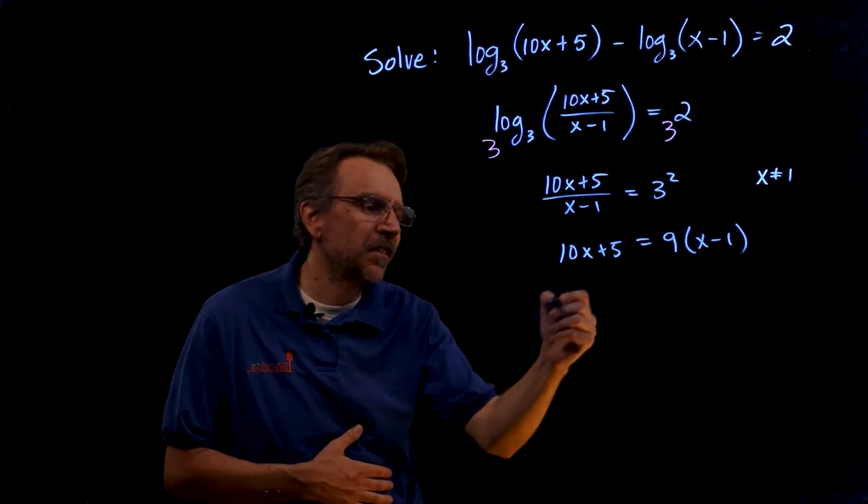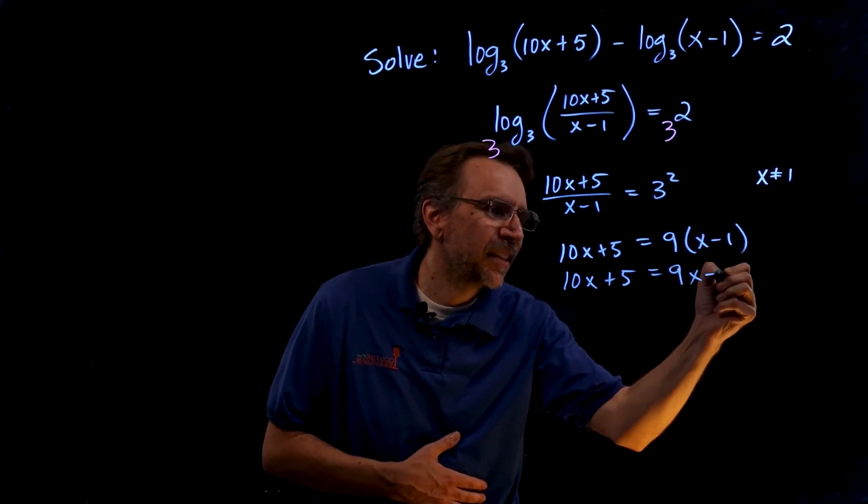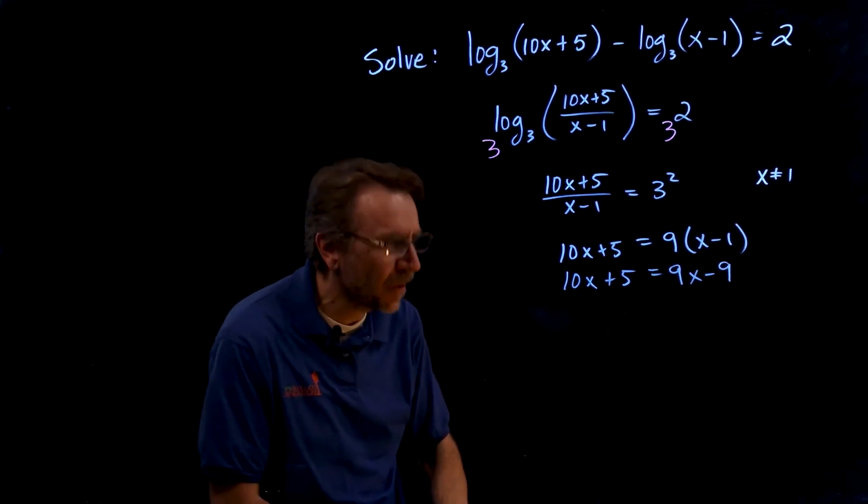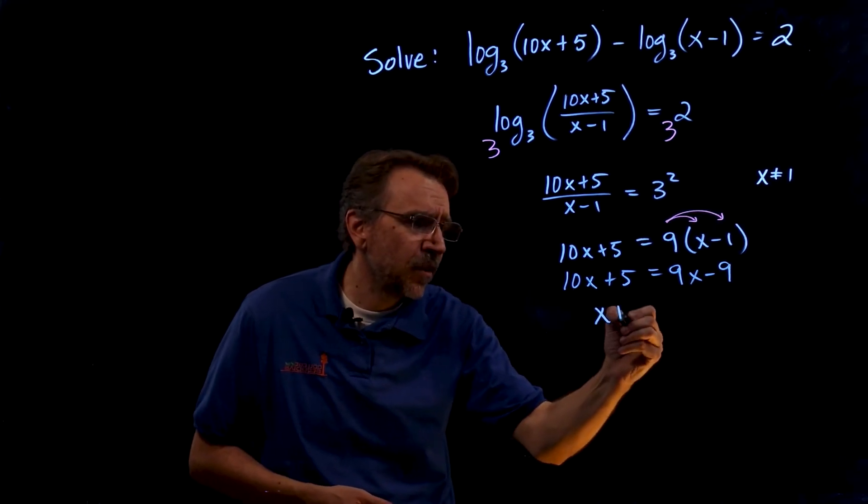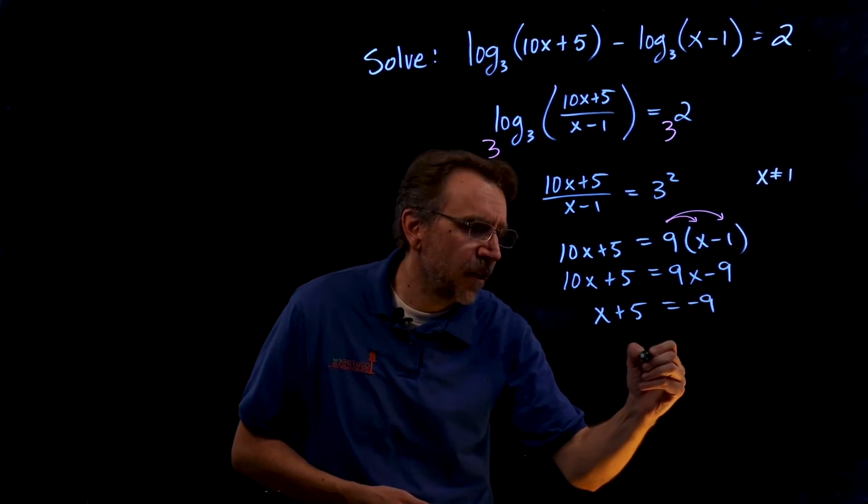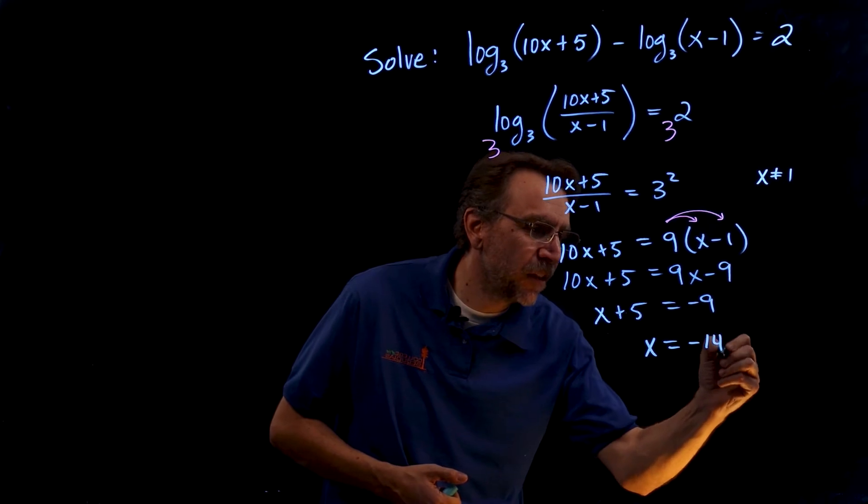And it's just a matter of solving this linear, it shouldn't take us too long, so 10x plus 5 equals 9x minus 9, okay so here just distributing. And then subtracting 9x we get x plus 5 equals negative 9, okay and then subtracting 5 we get x equals negative 14.